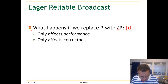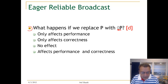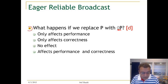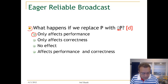Here are possible alternative answers. In the Lazy Reliable Broadcast, if we replace P by Diamond P, it could only affect performance, or it could only affect correctness, or maybe it has no effect whatsoever and affects both performance and correctness. The answer is that if we do this replacement, we only affect performance.